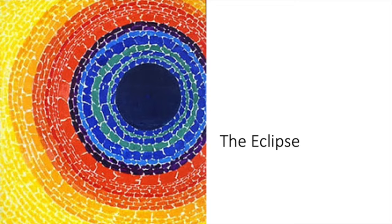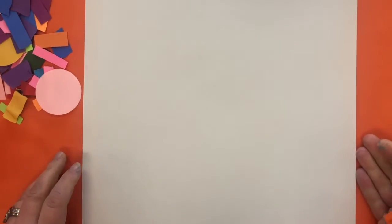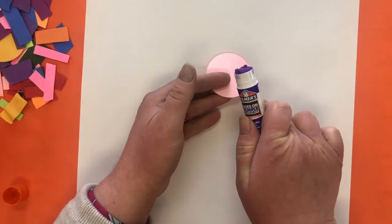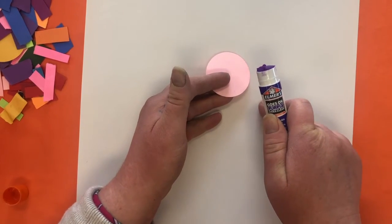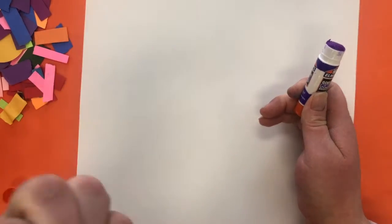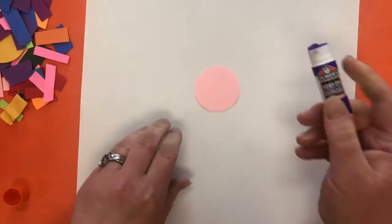All right. So let's learn how to make an artwork inspired by Elma Thomas. Hi, boys and girls. I hope you had fun learning about Elma Thomas. Now we are going to make a collage inspired by her artwork. So a collage is when you glue smaller pieces of paper down to a larger piece of paper to make a picture.